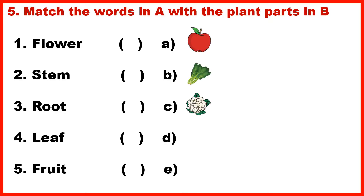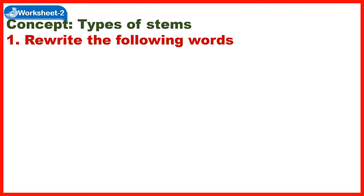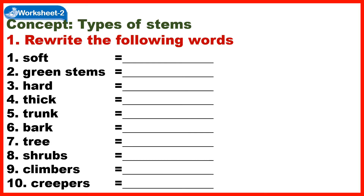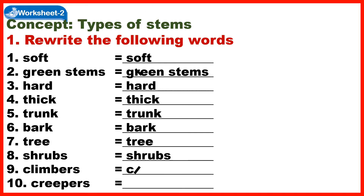Question 5: Match the words in A with the plant parts in B. Soft green stems, Soft, Hard, Thick Trunk, Bark, Tree, Shrubs, Climbers, Creepers.